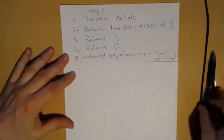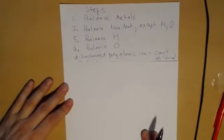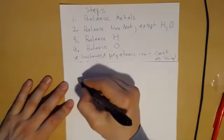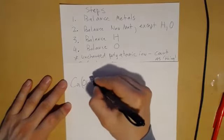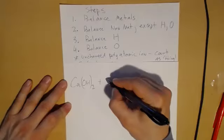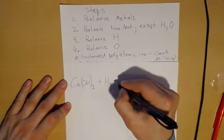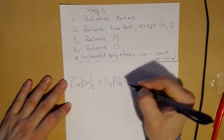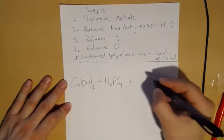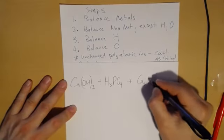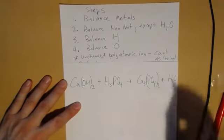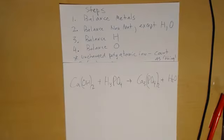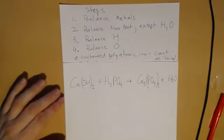Okay, let's have my favorite one which is calcium hydroxide, but now let's react with phosphoric acid. I'm ignoring the states and just focusing on balancing. It goes to Ca₃(PO₄)₂ plus H₂O.